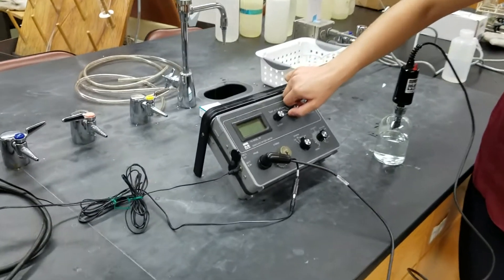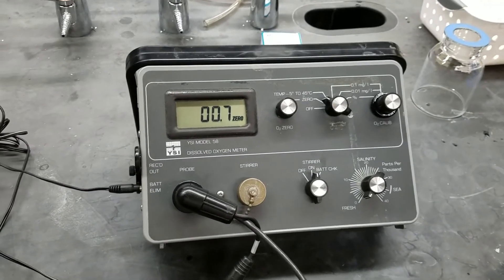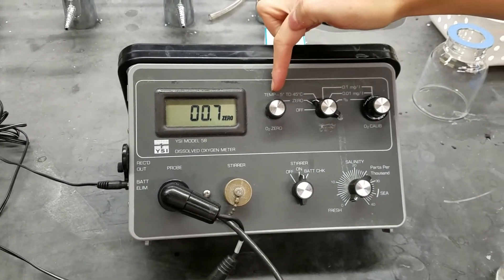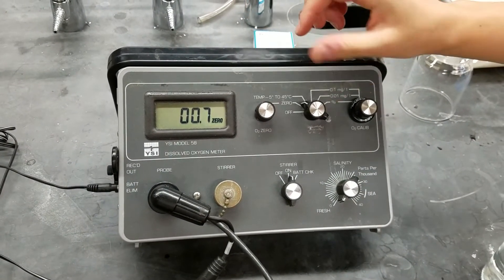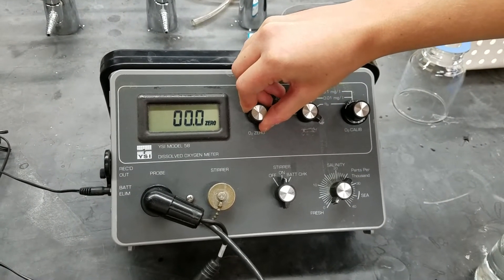So we turn this knob to the setting called zero. And we want our dissolved oxygen reading to be zero here. So we'll turn this knob here until it's at zero.